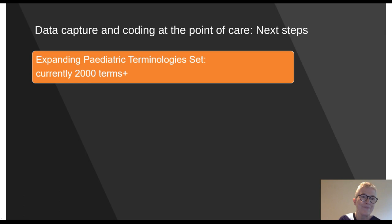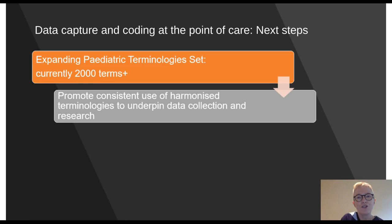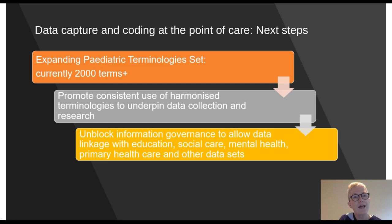The next steps involve building on our original paediatric terminology set. I now chair the Informatics for Quality Committee at the Royal College of Paediatrics and Child Health in the UK. We're currently working with specialty groups to include more terminologies — we're up to over 2,000 at the moment — and we will be requesting a new SNOMED CT paediatric terminology set. This is exciting work and we're collaborating with partners in New Zealand who are on a similar journey. We want to promote consistent use of the harmonised terminology to underpin data collection and to be a platform for future research.